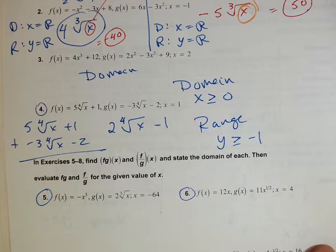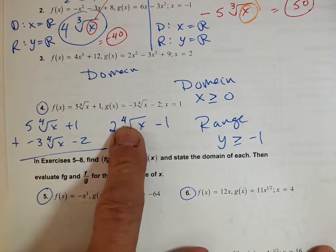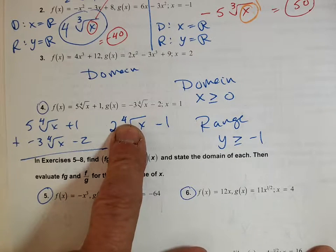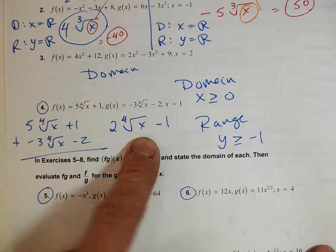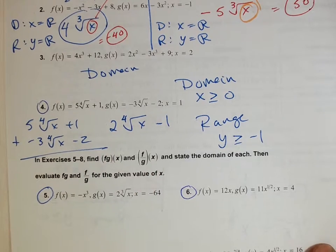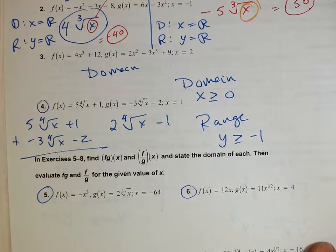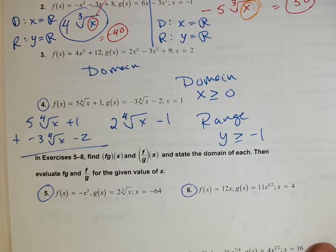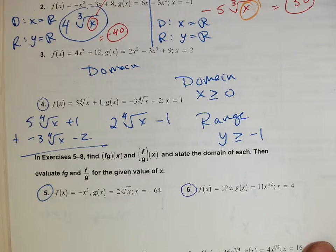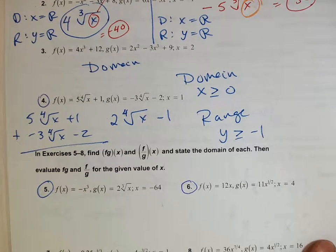Keep in mind: if it's an even root, you can't have negative values — you cannot take an even root of a negative number. If it's odd, you can, because a negative times a negative times a negative is a negative.